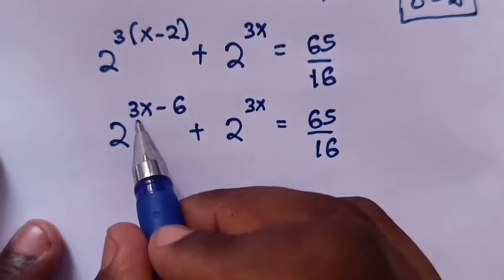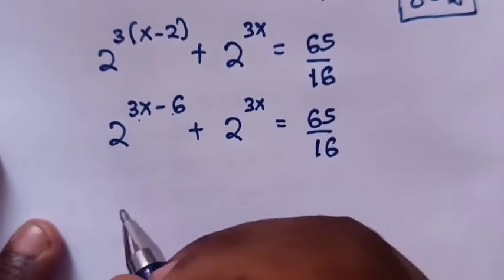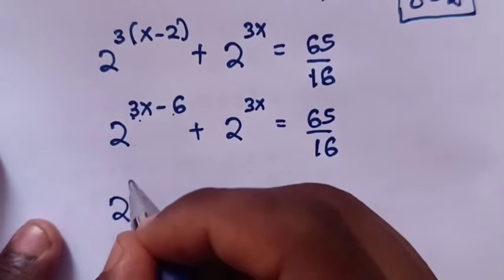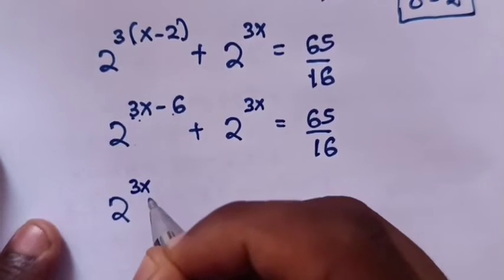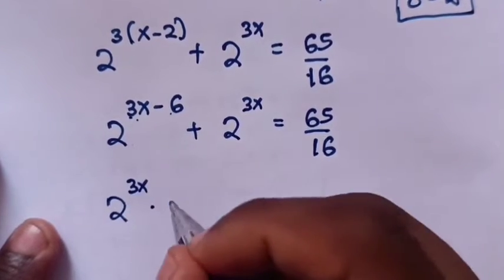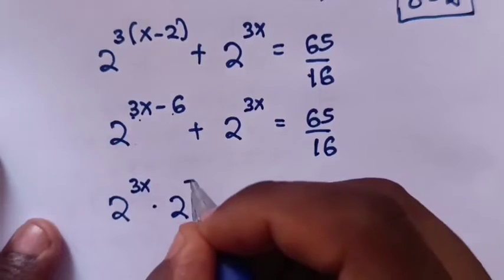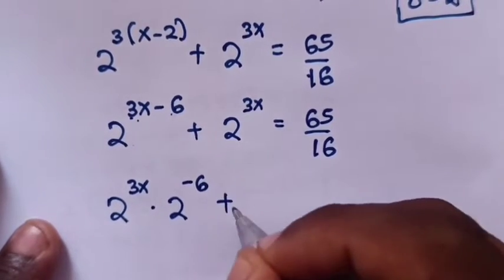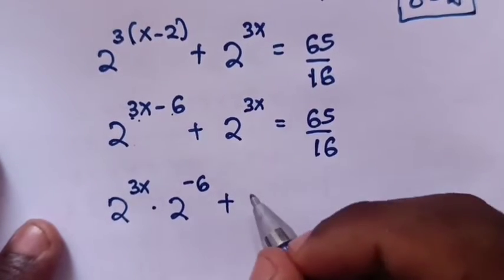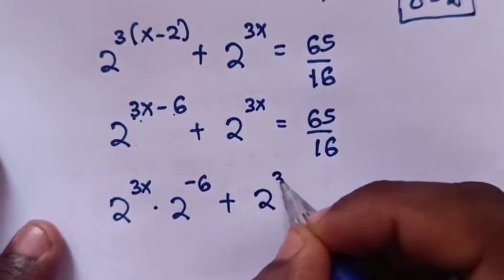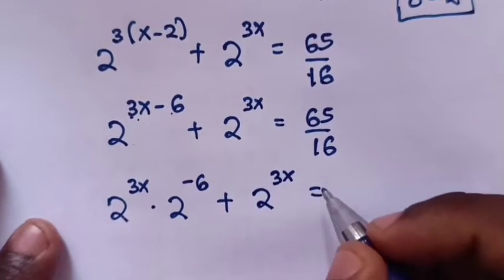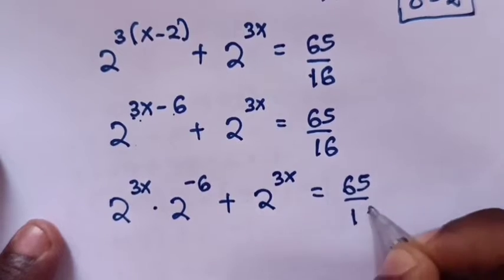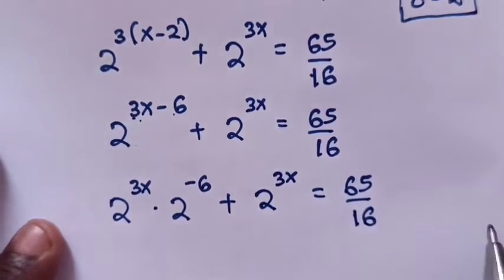From here, the subtraction of exponents means 2^(3x-6) is the same as 2^(3x) × 2^(-6), so we rewrite: 2^(3x) × 2^(-6) + 2^(3x) = 65/16.